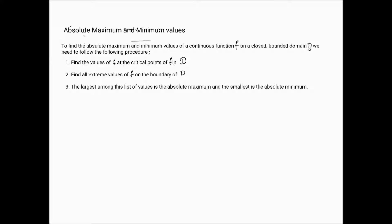This is very similar to the 1D cases you would have looked at. For instance, if a function looks like this and the interval goes from a to b, the critical value c would be identified inside. We would calculate f(c), f(a), and f(b). Whichever is the largest is the absolute maximum, and whichever is the smallest is the absolute minimum. From the picture, f(b) is likely the absolute maximum and f(c) is the absolute minimum.